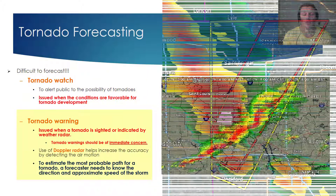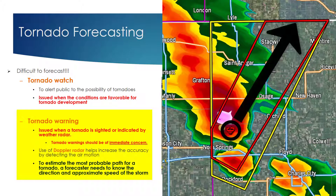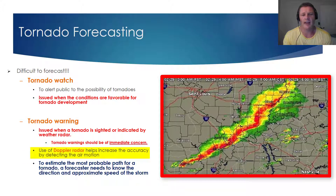When a tornado warning is issued, you should seek shelter immediately. Tornado warnings will be issued when a tornado is sighted, or it's indicated on weather radar. I'd like to stress once more that tornado warnings should be of immediate concern. Meteorologists rely on Doppler radar to detect air motion associated with tornadoes. We've come a long way in being able to warn the public when a tornado is approaching.